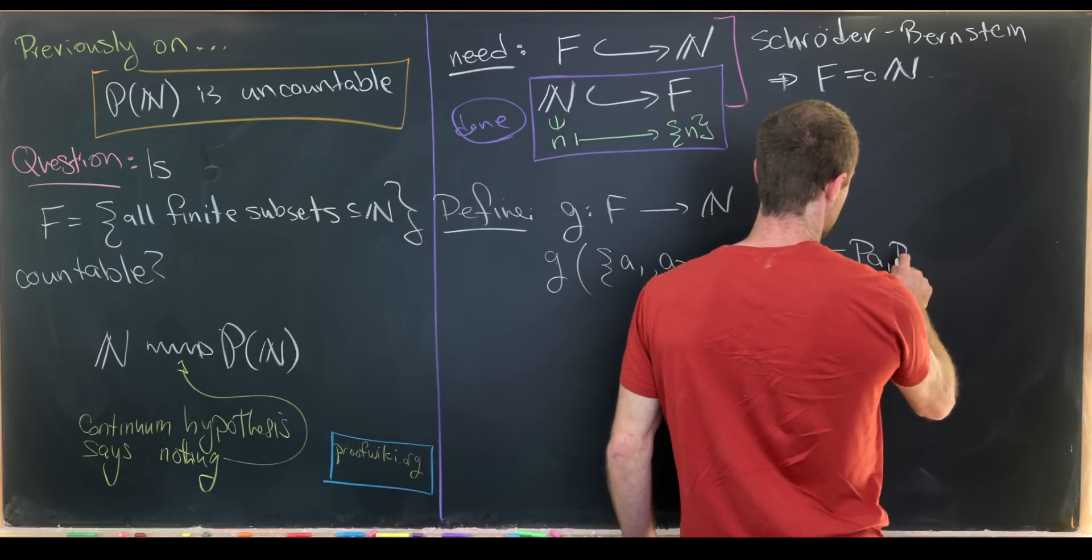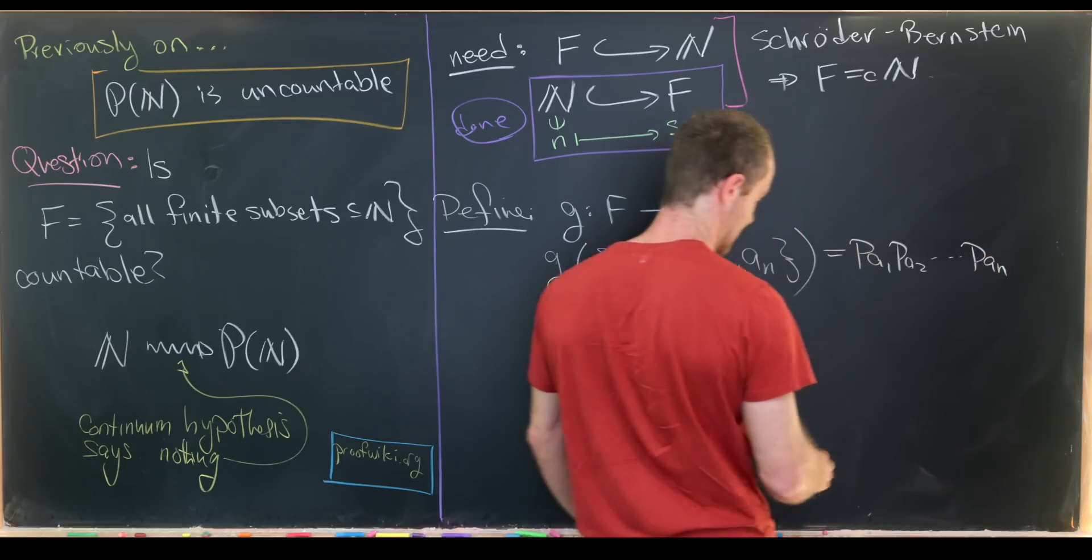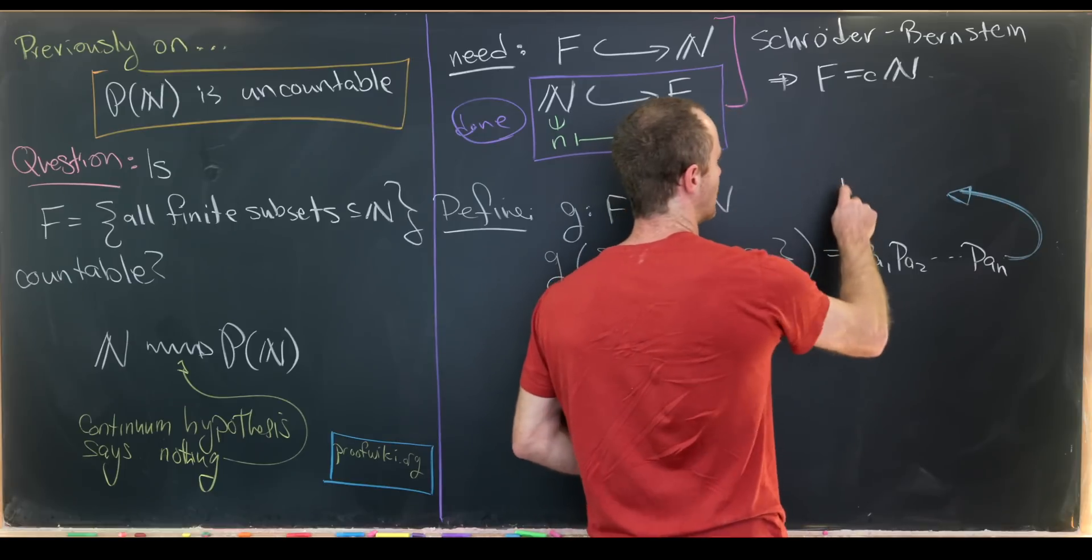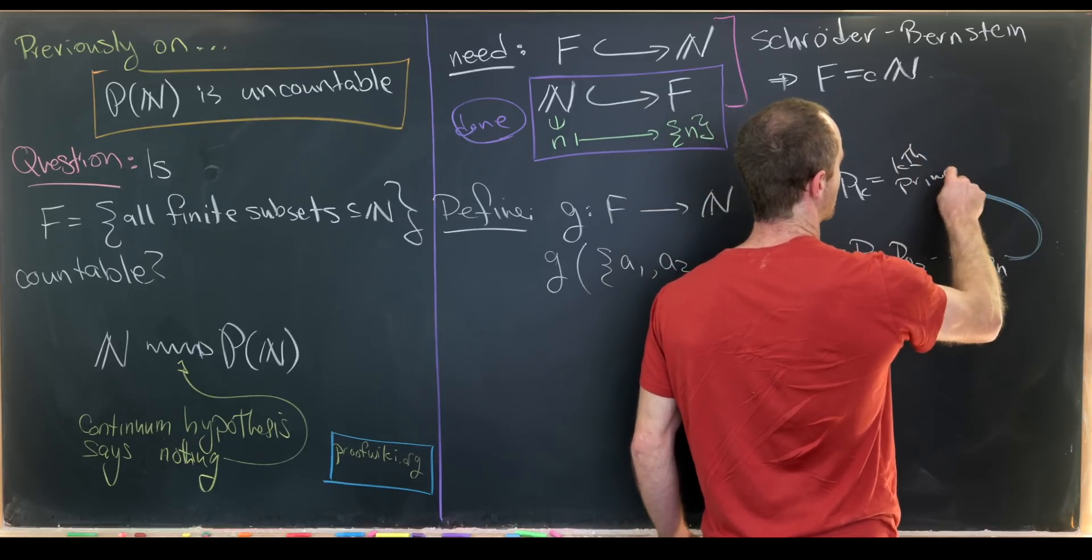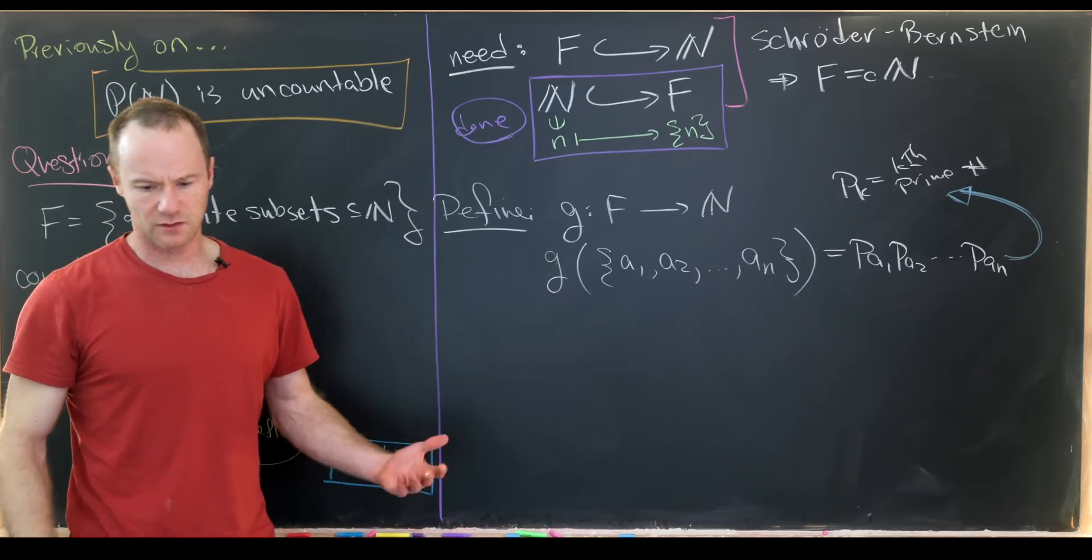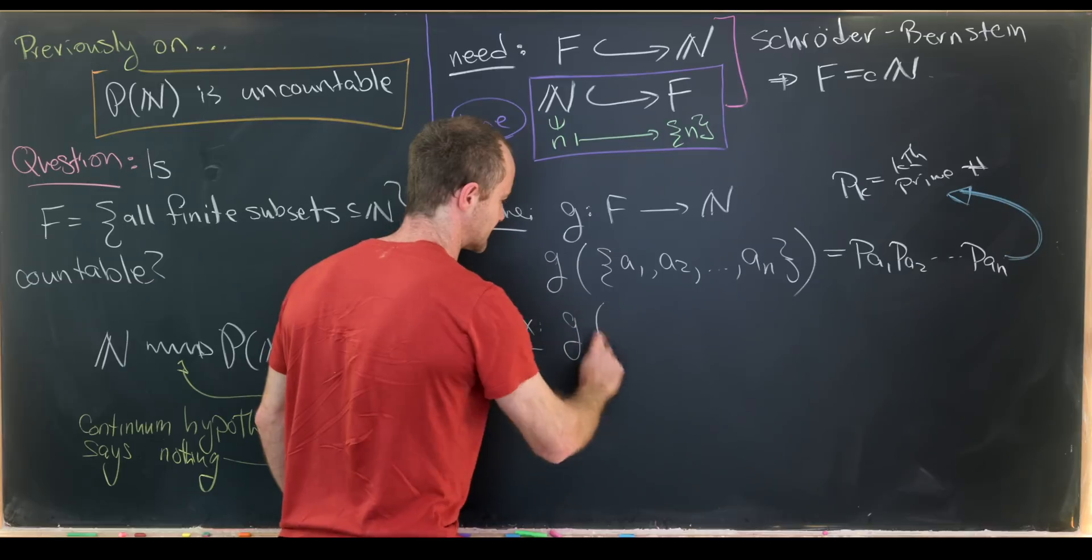We will assign it to the natural number P_{A1} × P_{A2} × ... × P_{A_N}. What is this P object? P_K is the Kth prime number. So let's do an example to get a feel for how this works.